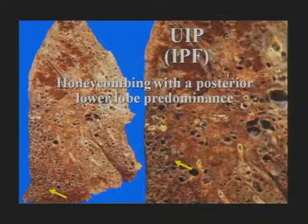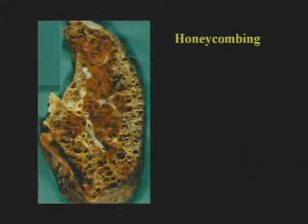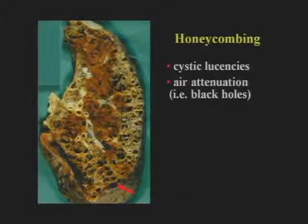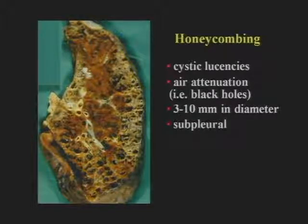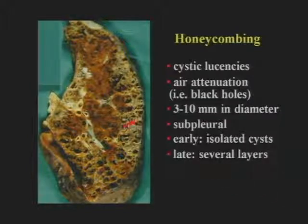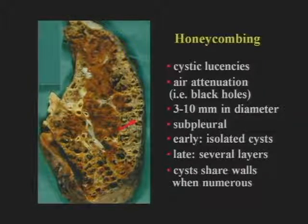This sagittal lung slice in a patient with UIP-IPF demonstrates honeycombing with posterior lower lobe predominance. Honeycombing indicates cystic lucencies that are air-containing — empty holes that should look absolutely black on high-res CT. They are three to ten millimeters in diameter most of the time, but may be larger or smaller. They must be seen in a subpleural location, or you cannot be sure they are honeycombing. Early on you only see a few isolated cysts; later, cysts occur in several layers and share walls when numerous. They tend to occur in clusters and have a recognizable fibrotic wall surrounding them.